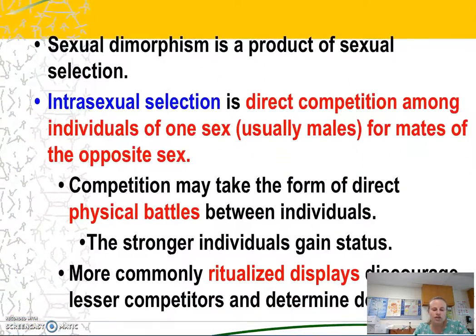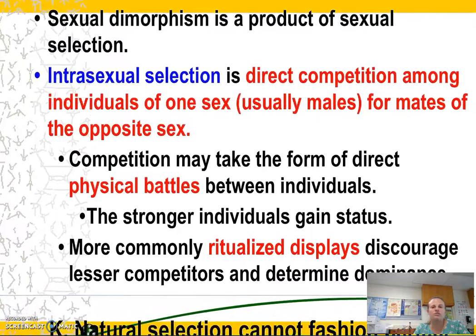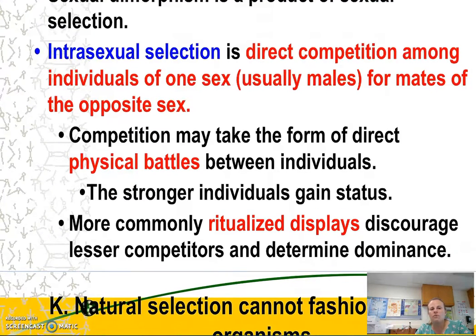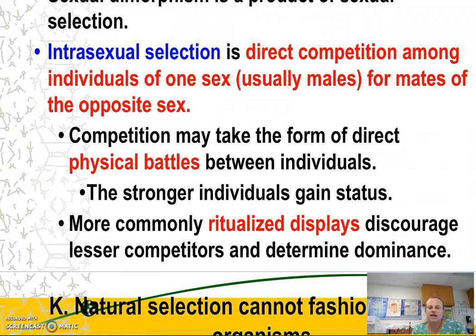Intra-sexual selection is direct competition among individuals of one sex — usually males — for mates of the opposite sex. It can involve physical battles, but more often it's a ritualized display that discourages lesser competitors and determines who is the alpha, establishing dominance.